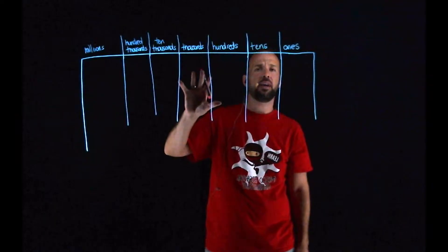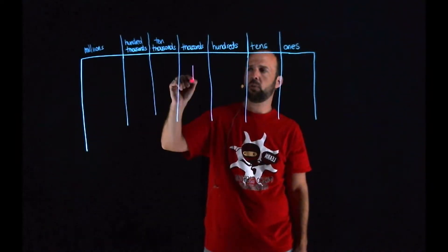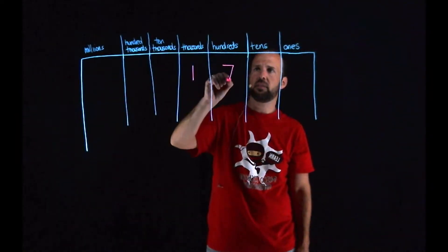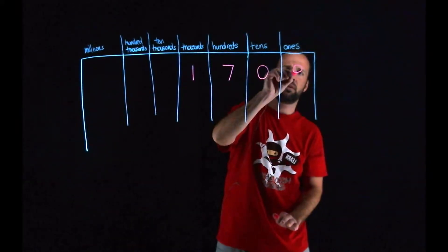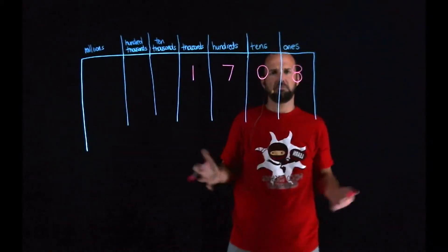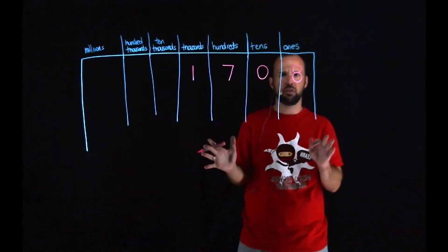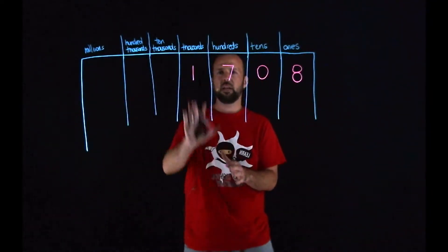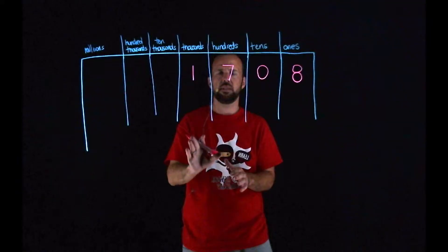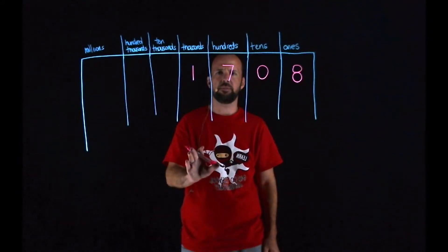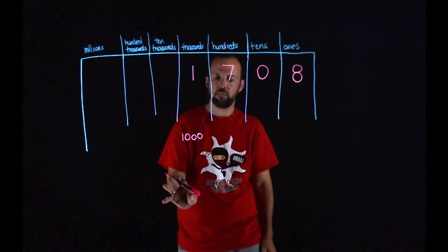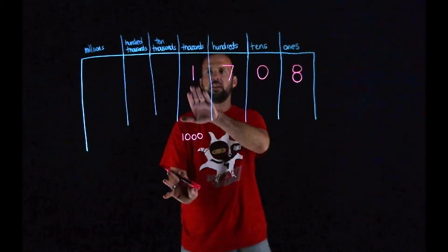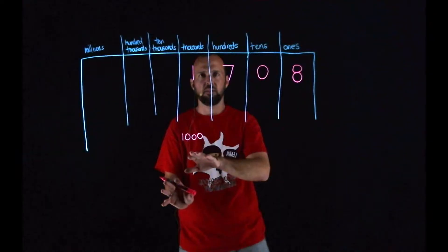So I'm going to go ahead and write it in my place value chart too so you can check yours against mine. If I had 1,708, I'm going to start here with 1,000, I'm going to have my 700s, I don't have any 10s, and I have 8. So the value of that 1 in the 1,000s place is 1,000.